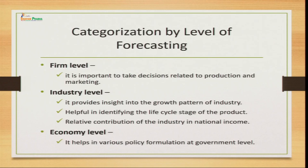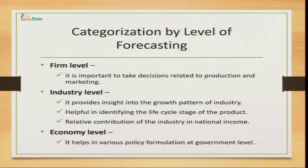At firm level, as an individual firm, you want to know what will be the demand of your product so you can make decisions regarding production and marketing - how you are going to produce, how much you are going to produce. You can forecast demand for your specific firm. Forecasting can also be done at the industry level - a group of firms working in the same product line comprises an industry - and this provides insight into the growth pattern of the industry.